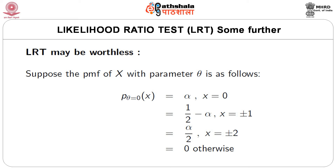We will start with the first property: LRT may be worthless. Consider the following example. Suppose P(theta=0)(x), that is the PMF of the random variable X at the point x under theta=0, is equal to alpha if x=0, equal to half minus alpha if x=±1, equal to alpha/2 if x=±2, and equal to 0 otherwise.